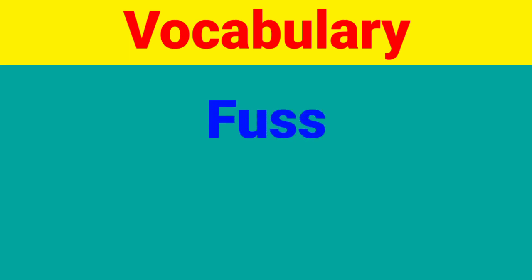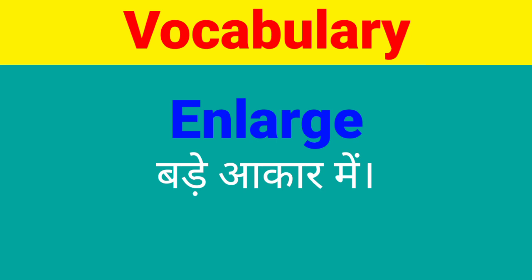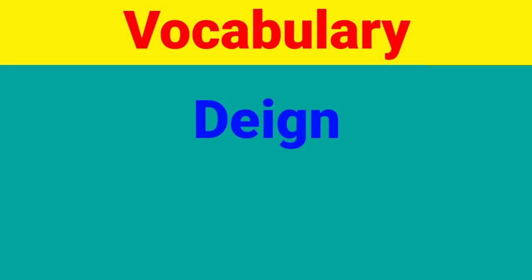Kitten ka Hindi meaning hai billi ka bachha. Next word is 'fast' — F-A-S-T. Fast ka Hindi meaning hai garvar. Next word is 'enlarge' — E-N-L-A-R-G-E. Enlarge ka Hindi meaning hai bade akar mein.